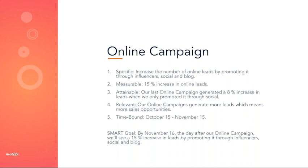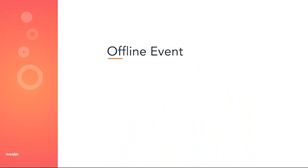So the full SMART goal is: 'By November 16th, the day after the online campaign, we will see a 15% increase in leads by promoting through influencers, social, and blog.' It doesn't have to be more complicated than this. What's important is that you track progress. And remember, SMART goals aren't only for online campaigns — you can use them for offline events as well.